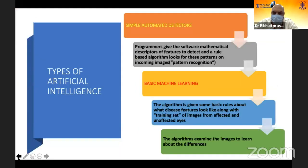Types of artificial intelligence: there can be simple, where the programmer gives the software mathematical descriptions of features to detect and a rule-based algorithm pattern — so pattern recognition is done and this is a simple automated data test. When we go to basic machine learning, the algorithm is given some basic rules about what features look like along with a training set of images, and we train the basic machine also.